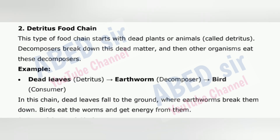2. Detritus Food Chain: This type of food chain starts with dead plants or animals, called detritus. Decomposers break down this dead matter, and then other organisms eat these decomposers. Example: Dead leaves (detritus) → Earthworm (decomposer) → Bird (consumer). In this chain, dead leaves fall to the ground where earthworms break them down, and birds eat the worms and get energy from them.